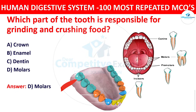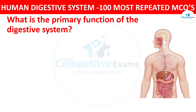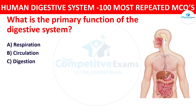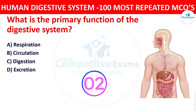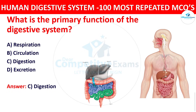Question number one: What is the primary function of the digestive system? The options are respiration, circulation, digestion, and excretion. The correct answer is digestion. The main purpose of the digestive system is to break down food into nutrients that the body can absorb and use.